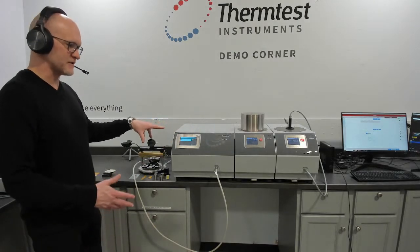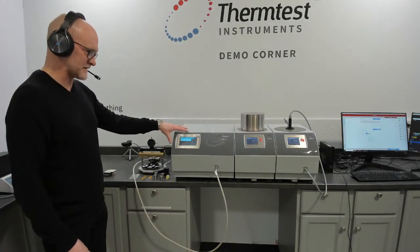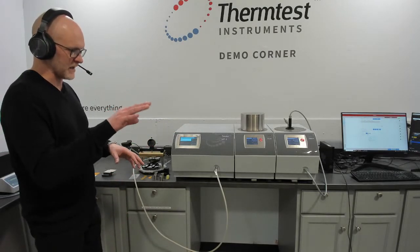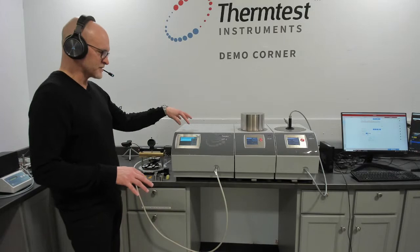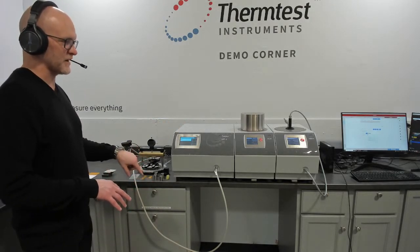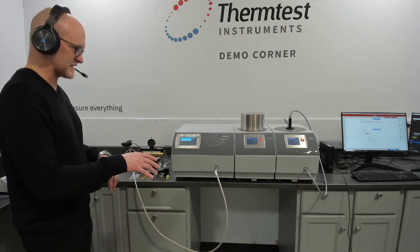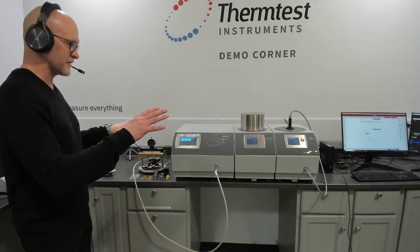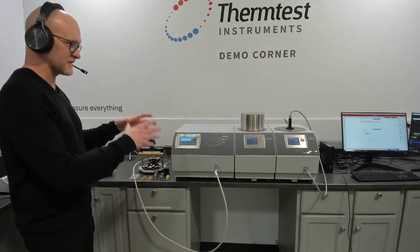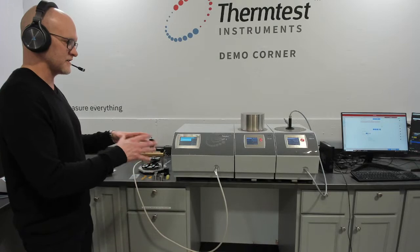The transient plane source method inside the MP1 has an overall connectivity range of 0.005 up to 2000 watts per meter Kelvin. What allows us to do that is having the available test times to accommodate reasonably sized sensors of those high conductivity diffusivity materials. So the MP1 TPS method has the shortest test time of 0.25 seconds all the way up to 2,560 seconds, which is a wide range of test times to accommodate different diffusivities in samples size scales.